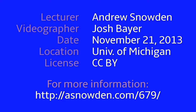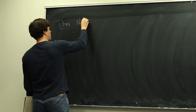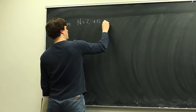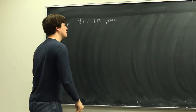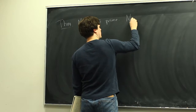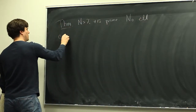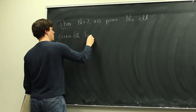So last time we started proving Mazur's theorem, so let me remind you what we're doing. We have n greater than 7, not equal to 13, and prime. We want to show that no elliptic curve over Q has a rational point of order n.